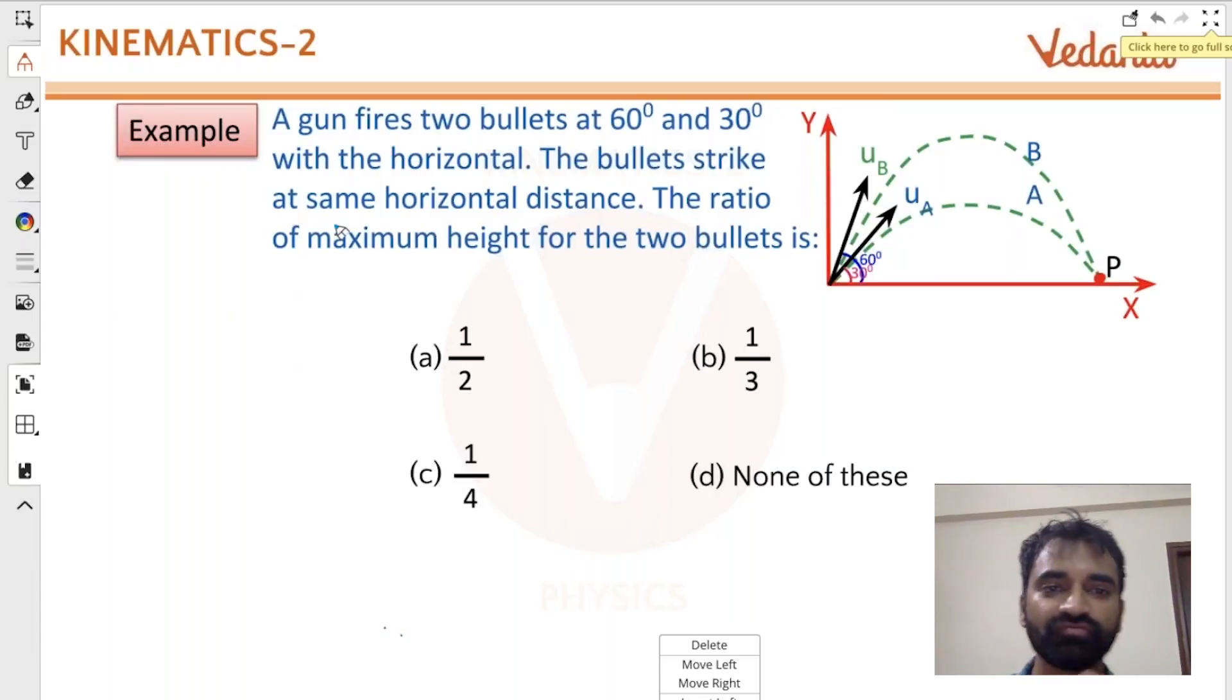This is a question where we have a gun that fires two bullets at 60 degrees and 30 degrees with the horizontal. The bullets strike at the same horizontal distance - we know that already because these are complementary angles, so that is a useless piece of information. The question is: what is the ratio of maximum height of the two bullets?